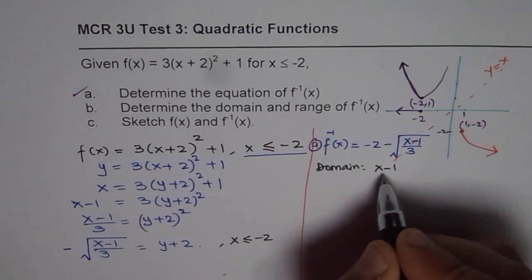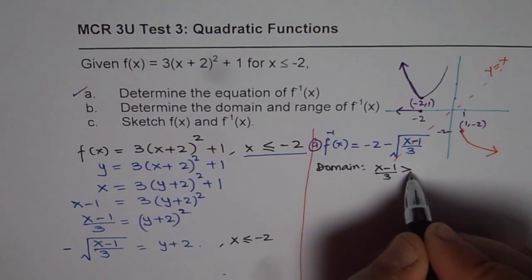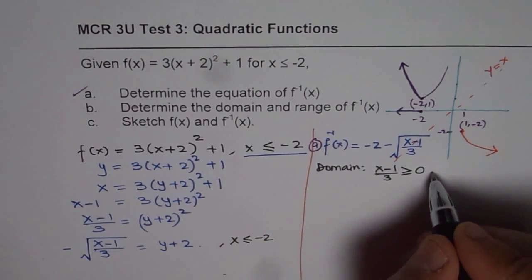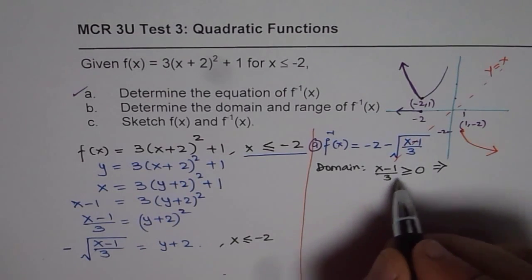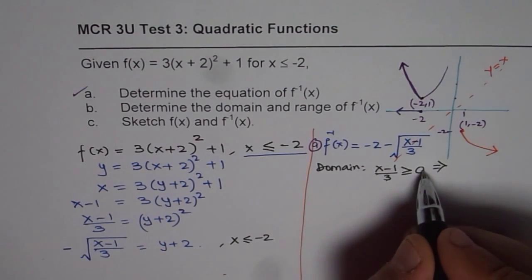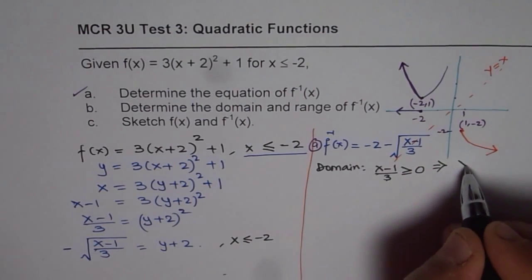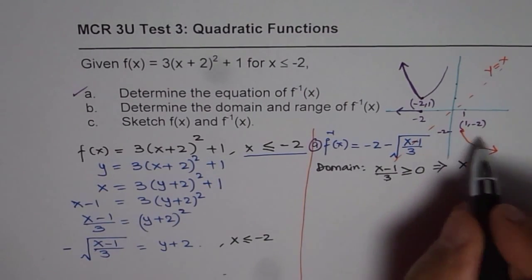So (x - 1)/3, whatever is there should be greater than or equal to 0. So that gives us, that means when you multiply 3 by 0, you get 0. That gives us x is greater than 1. So that is the domain. So you can see domain is x greater than 1.